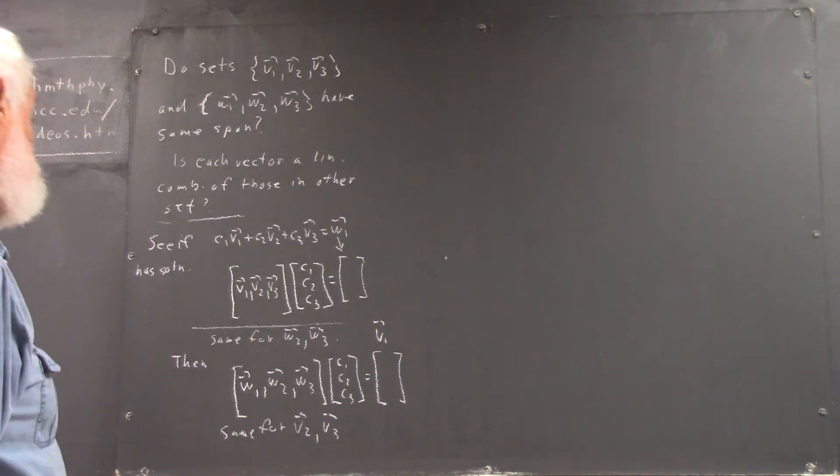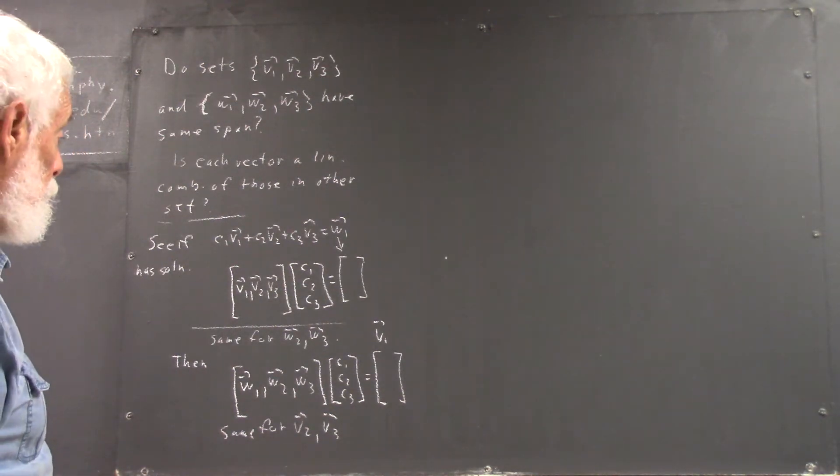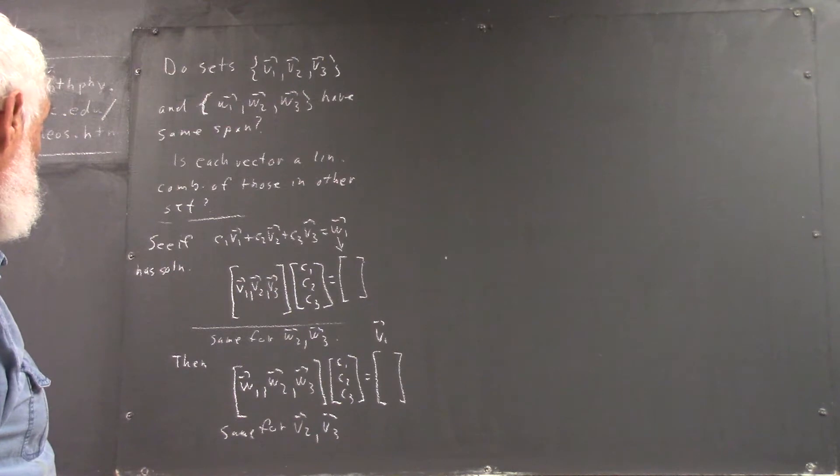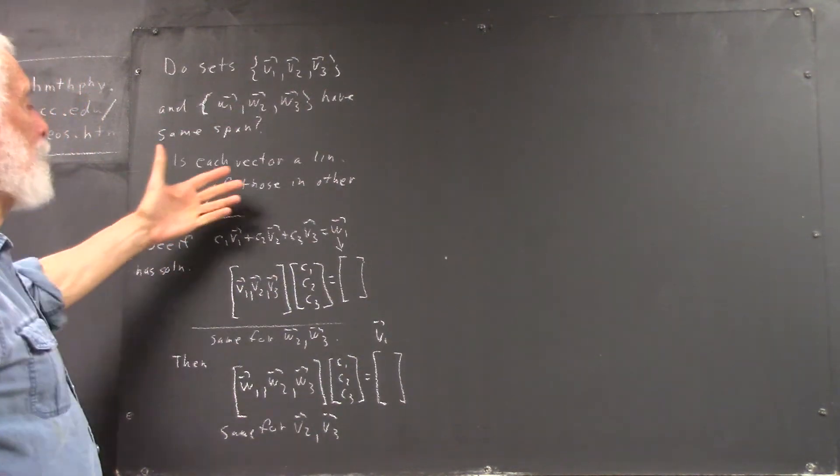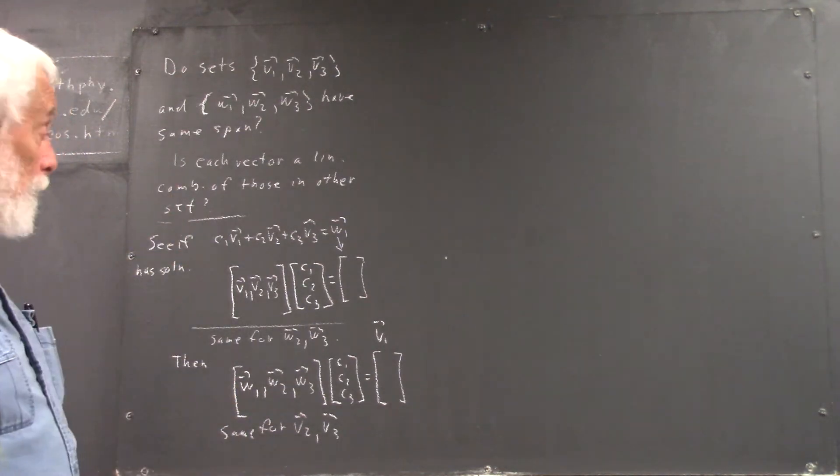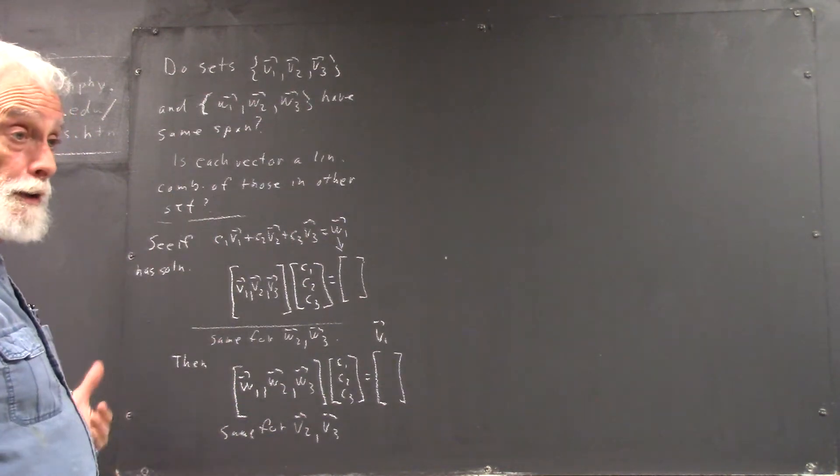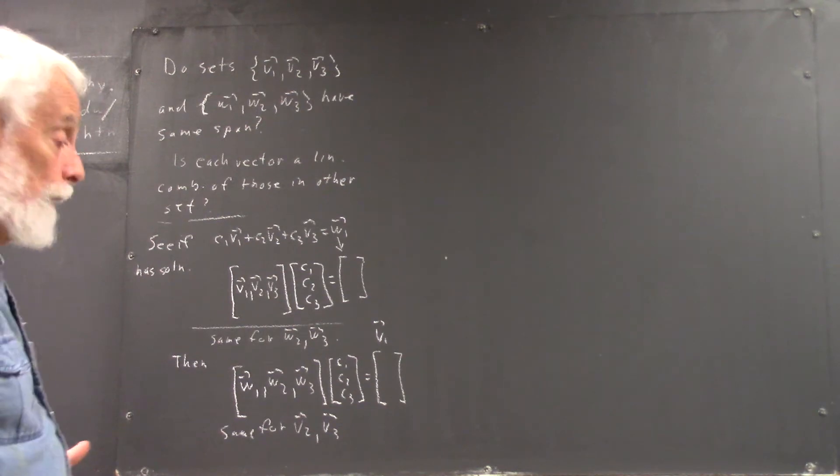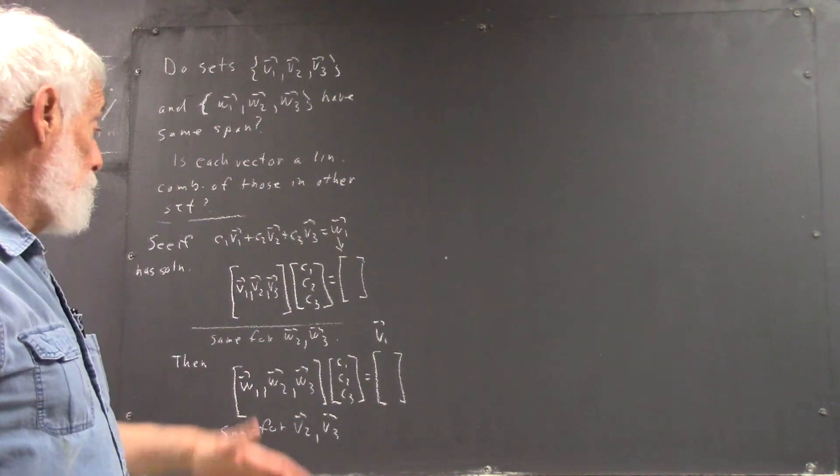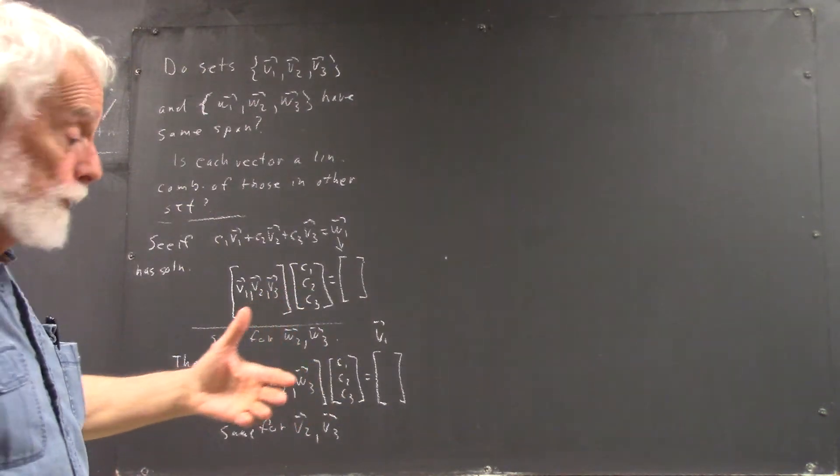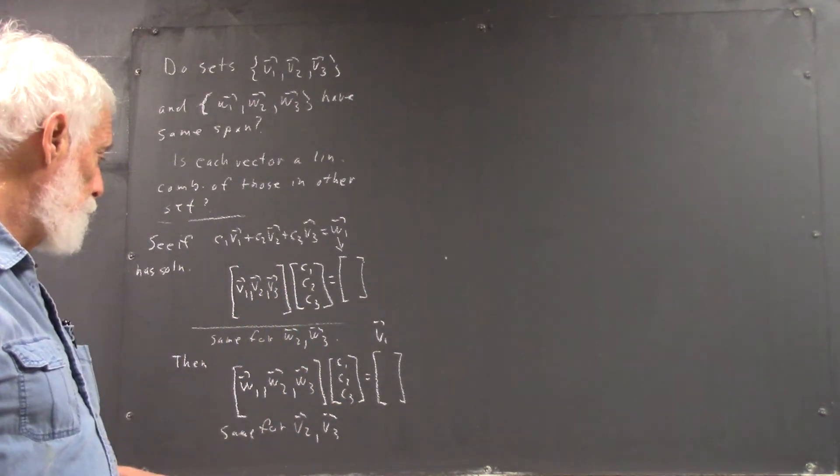But then, of course, well, there are shorter things you can do and you might want to think about it. But this is the basic idea. OK. Now, there's a much more compact way this can all be done. And it can be done by matrix reduction if you reduce the right matrices and lots of other things.